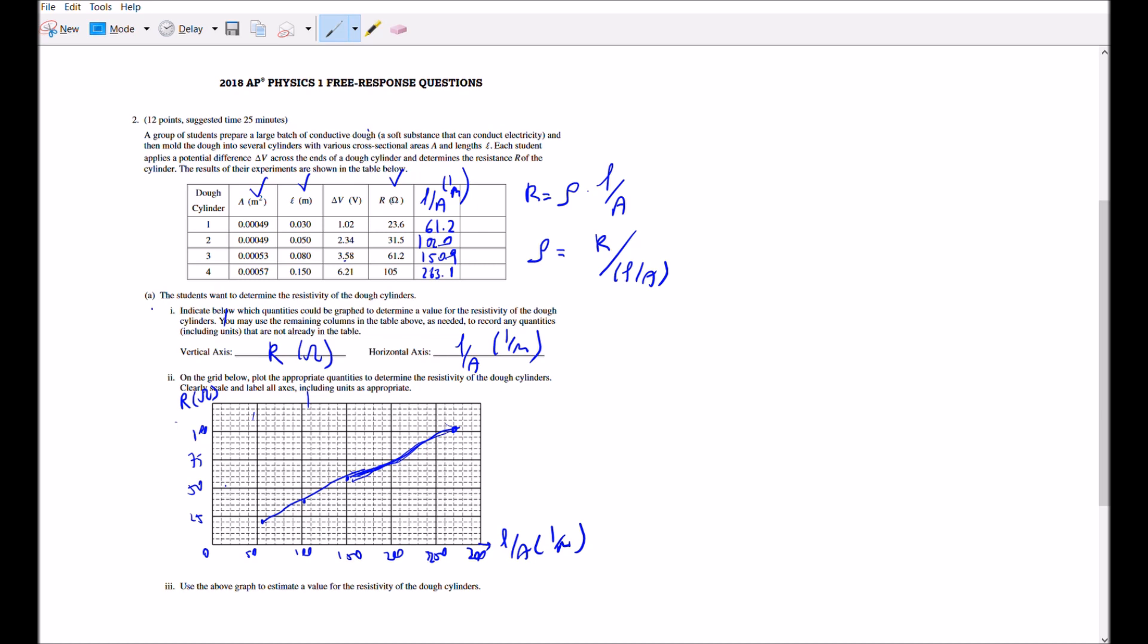Section 3 is asking you to estimate the resistivity. Remember, if you calculate the slope of a graph, which is tangent alpha, which will be rise over run—if you get the highest number and subtract the lowest number for rise, which is going to be 105 minus 23.6, divided by...